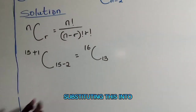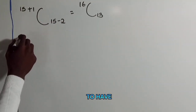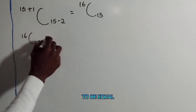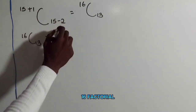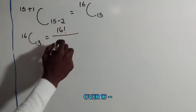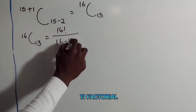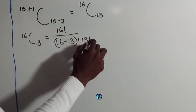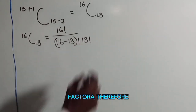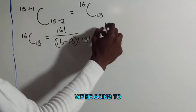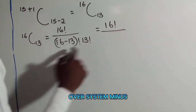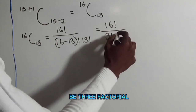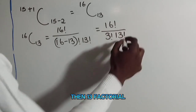Substituting into the formula, we have 16 combination 13 equal to 16 factorial over 16 minus 13 factorial times 13 factorial. Therefore we have 16 factorial over 3 factorial times 13 factorial.